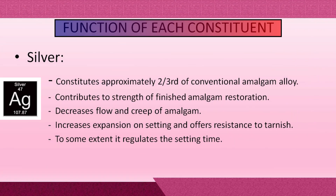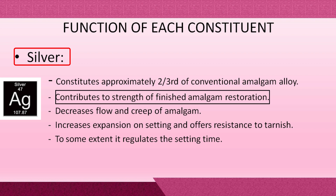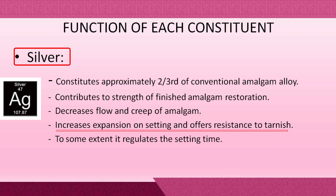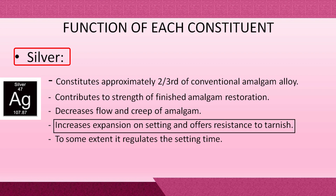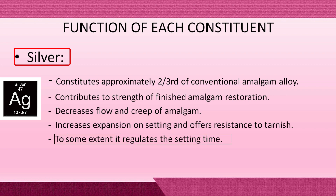Silver contributes to the strength of the finished amalgam restoration, which is very important for posterior teeth bearing heavy occlusal loads. Silver decreases the flow and creep of amalgam — decreased flow helps with proper manipulation, and decreased creep is good for marginal integrity. Silver also decreases tarnish, which is the loss of surface luster, thereby reducing bacterial adhesion. Silver also regulates the setting time, which is important for proper manipulation.